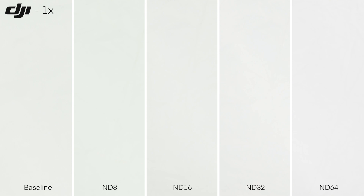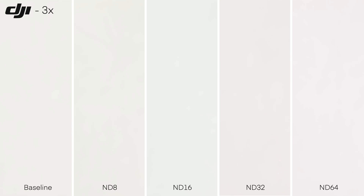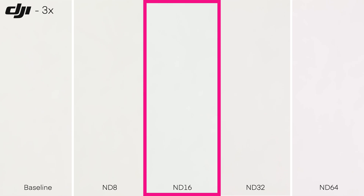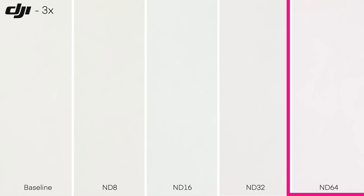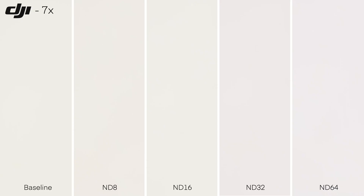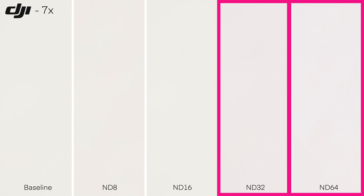At 1x, the DJI filter performed really well — changes in tint and color temperature were very minimal, meaning they were pretty neutral. At 3x, the differences were marginal, but the ND16 stood out by shifting towards green, and the ND64 shifted a little towards purple. At 7x, the filters performed really well with minimal changes — maybe a slight magenta on the ND32 and ND64, but likely still within the margin of error.